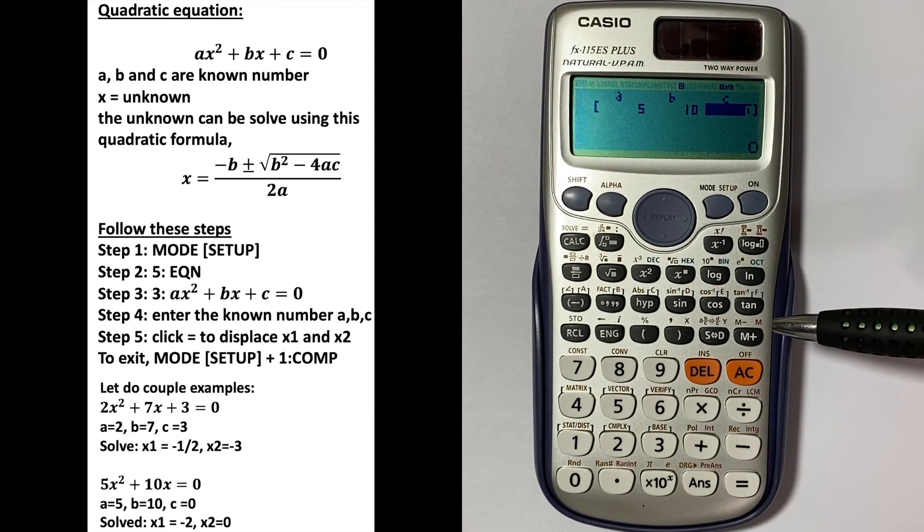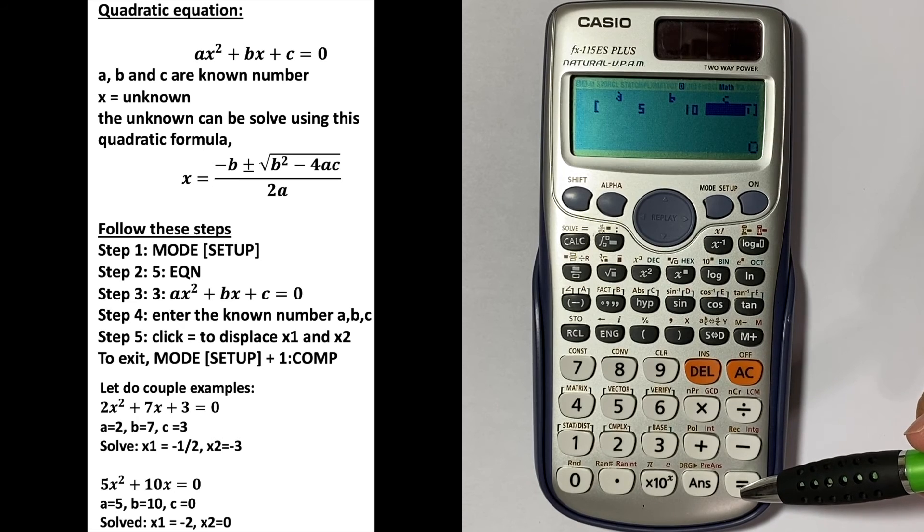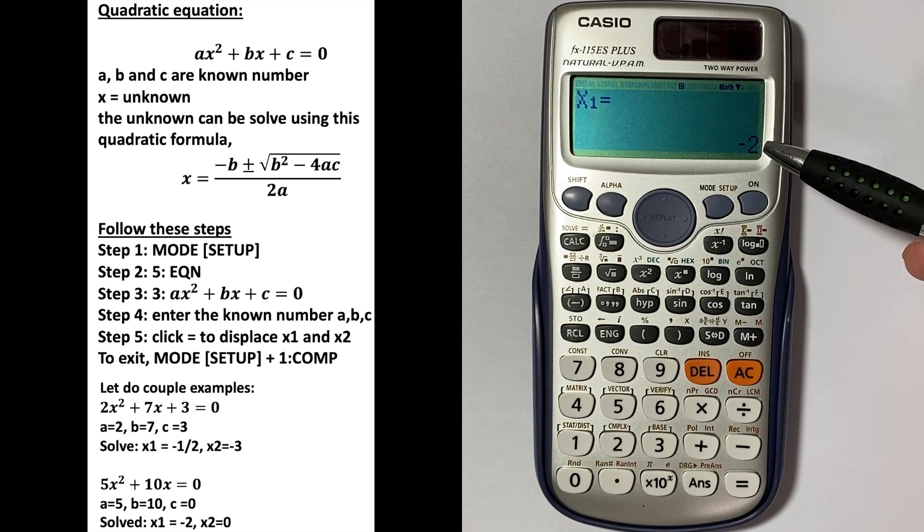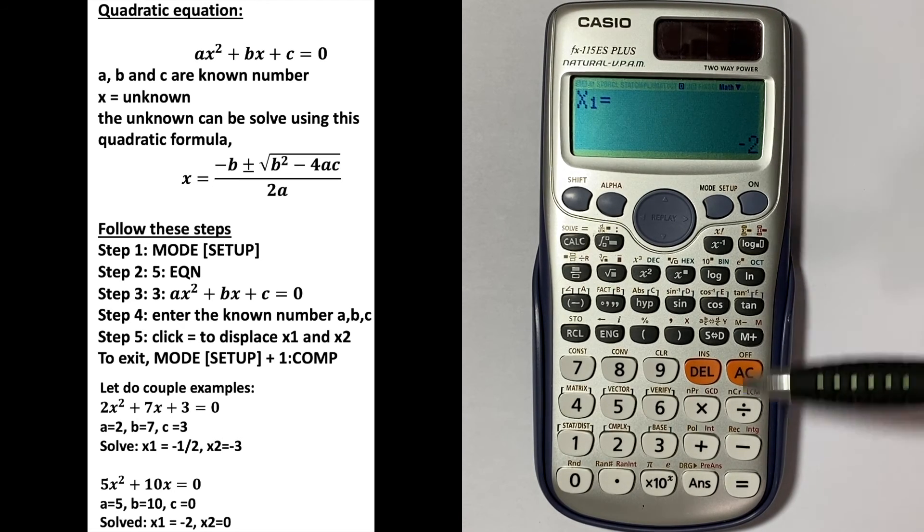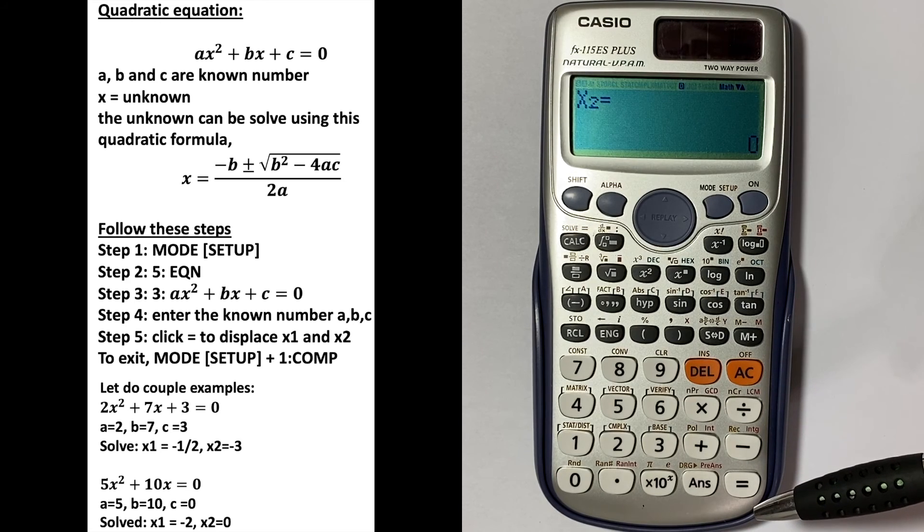Once you have entered everything, click equal again, and you will have x1 equal to negative 2, x2 equal to 0.